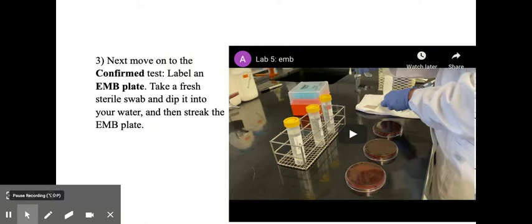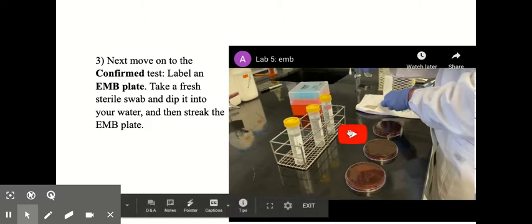coli grown on an EMB plate would get a greenish metallic looking sheen on the colonies. So for the presumptive, I'm sorry, for the confirmed test,